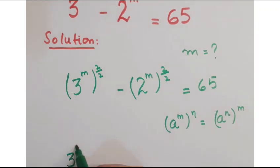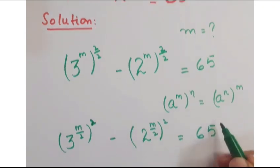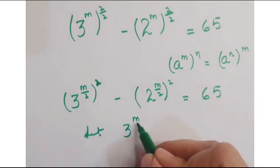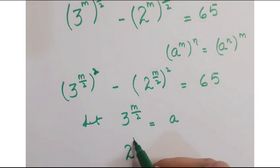So we can write this as 3 to the power m upon 2 whole to the power square minus 2 to the power m upon 2 whole square is equal to 65. Now, let's assume that 3 to the power m upon 2 is equal to a and 2 to the power m upon 2 is equal to b.